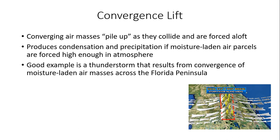A good example is a thunderstorm that results from convergence of moisture-laden air masses across the Florida Peninsula. The graphic shows a sea breeze thunderstorm where we get low-level converging air: the sun heats the surface over Florida, a westerly wind comes in from the Gulf of Mexico, and an easterly wind comes in off the Atlantic. Where these two airstreams meet, the air rises sometimes vigorously and produces strong thunderstorms. If you live in the Orlando area, central Florida, you're very familiar with this phenomenon, especially during summer when intense solar radiation destabilizes things, producing typical afternoon showers and thunderstorms.